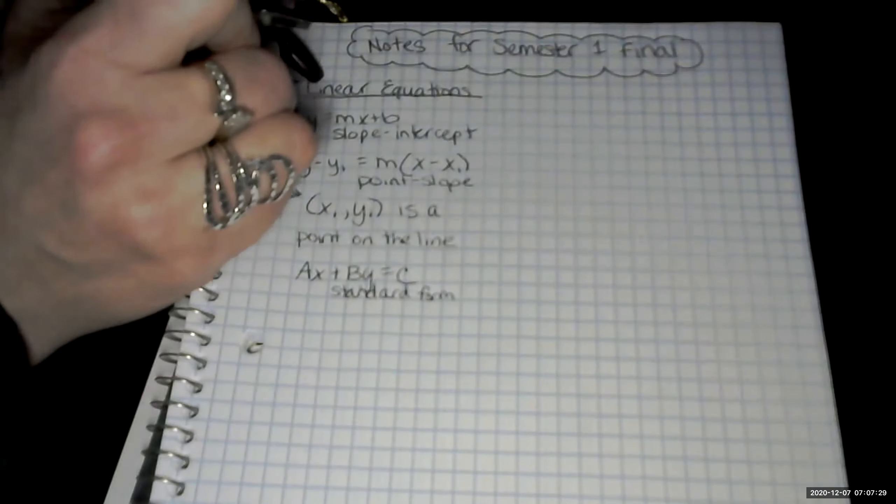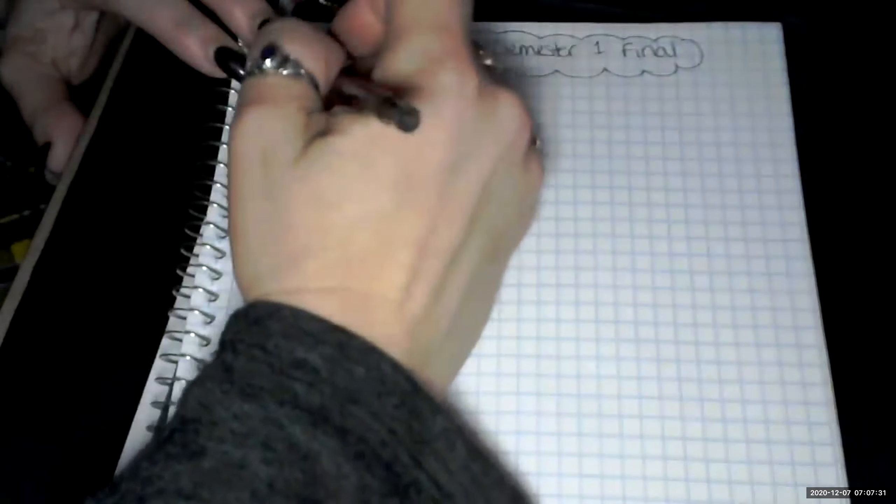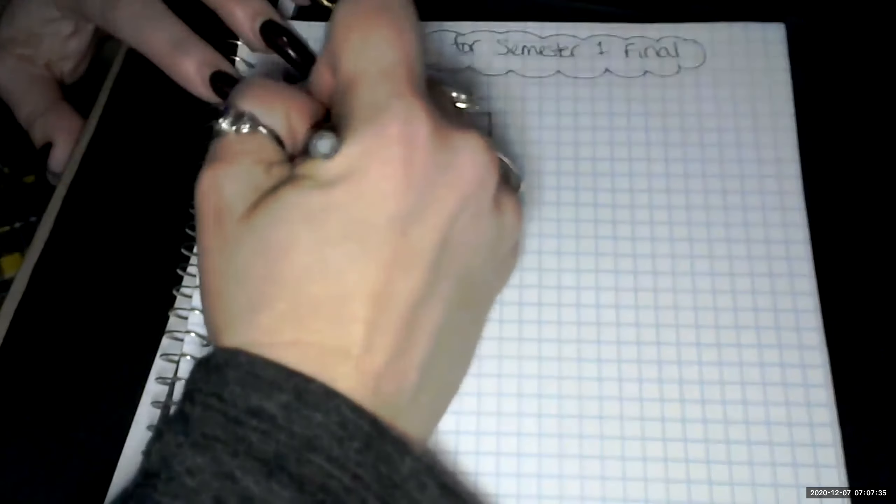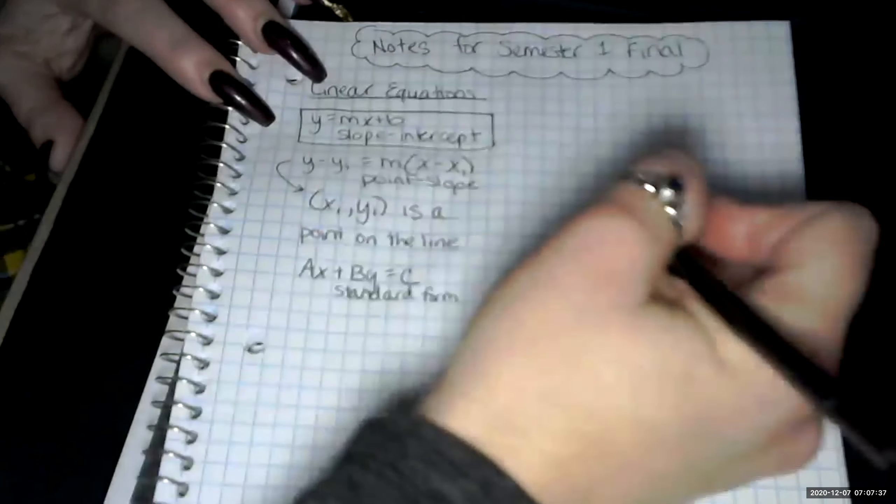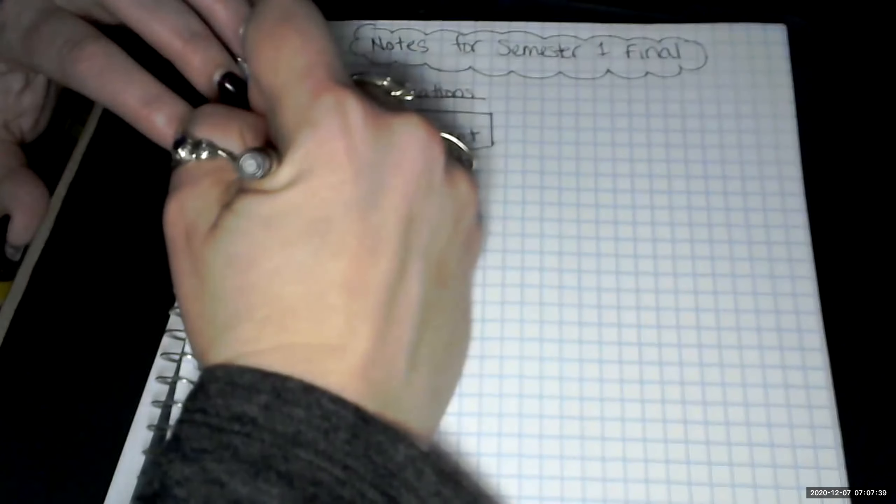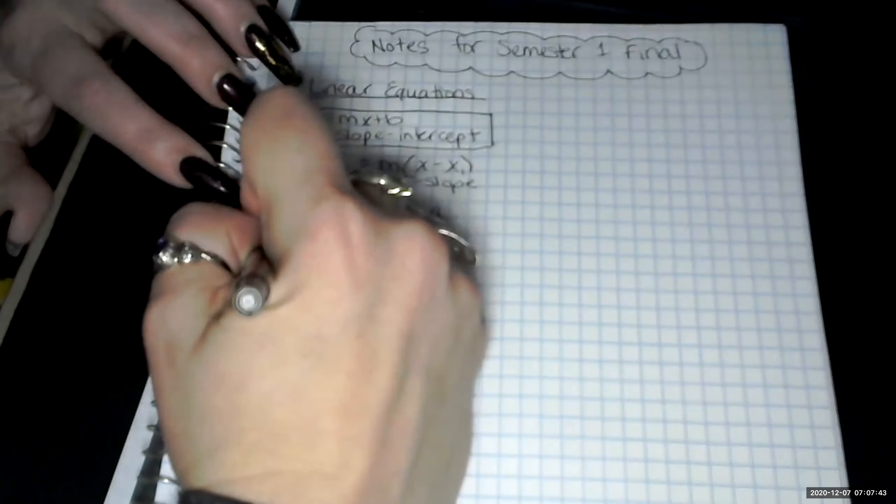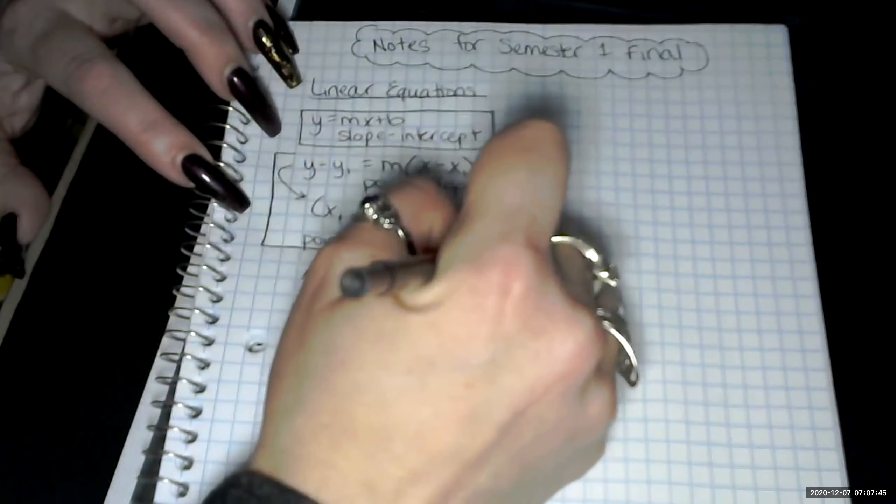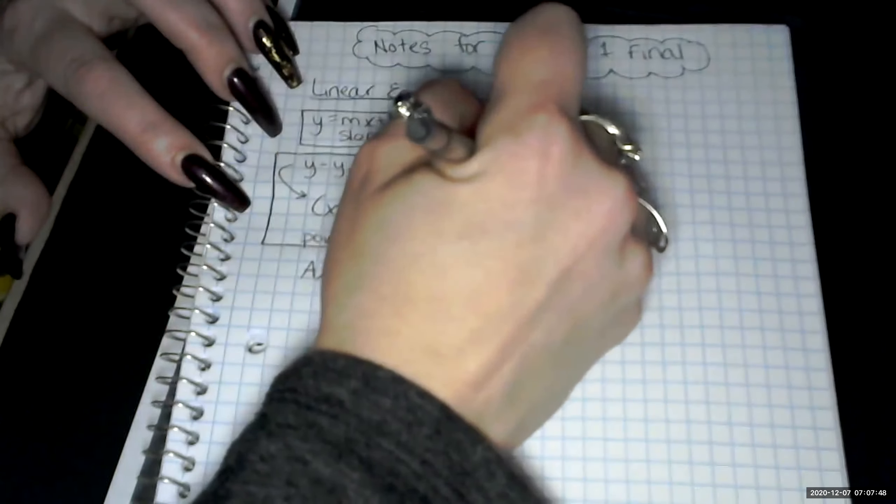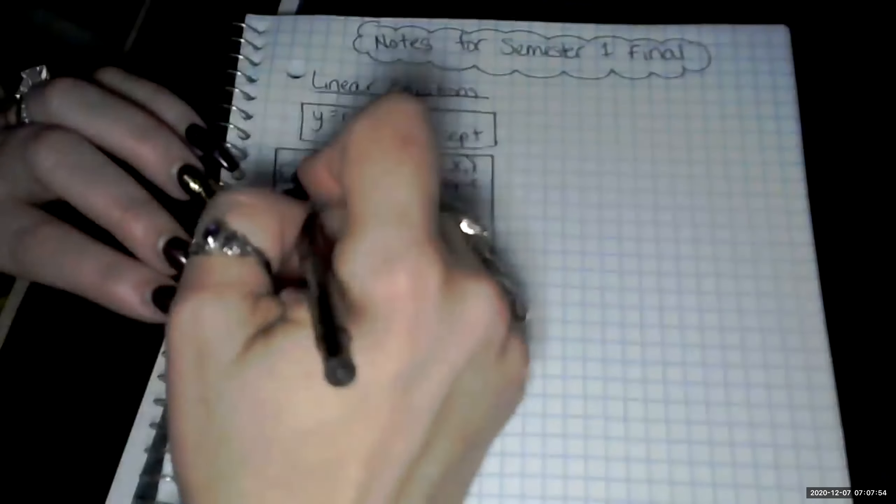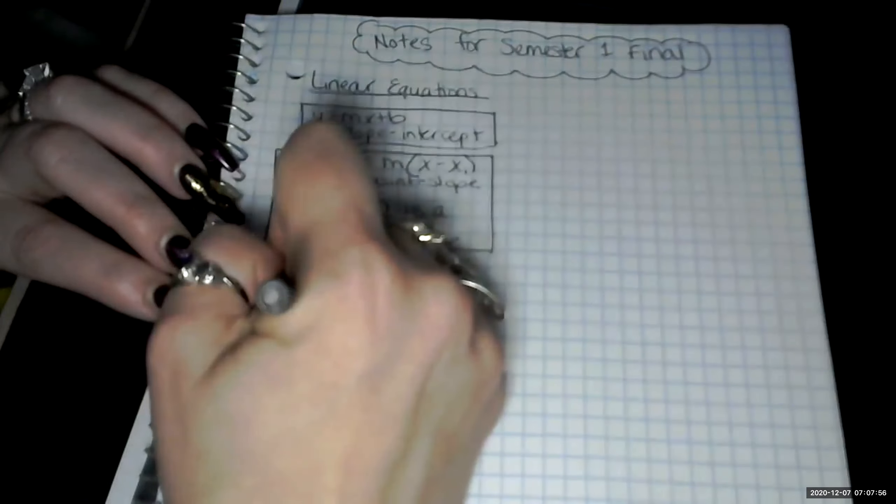And we need to kind of separate these. It's another reason why I love to take notes on graph paper, because we have these lines that we can follow and make it very nice to separate them. So I'm just putting each type of linear equation form into its own box.